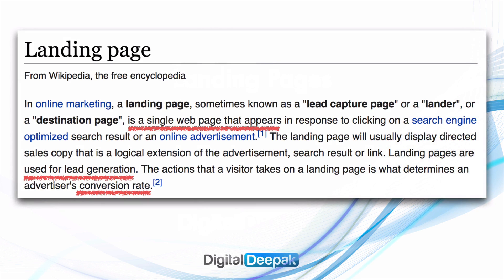First let us look at how we define a landing page. A landing page is basically a single page website, which is different from normal websites that you see on the internet. According to Wikipedia, a landing page is a single webpage that appears in response to a particular link click. More often than not, landing pages are used for lead generation — sometimes for conversion as a sales page — and what's most important is the conversion rate.